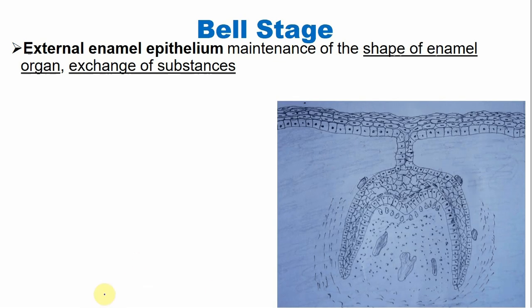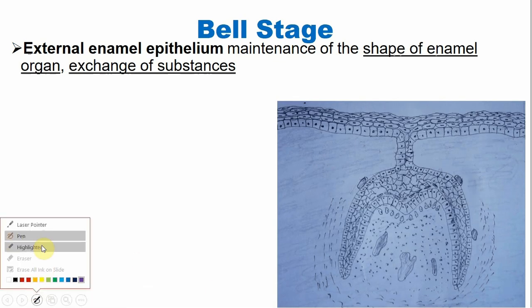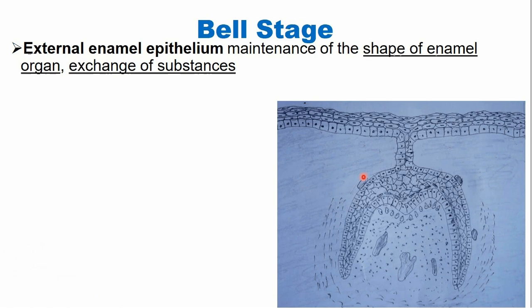Because the blood vessels are present outside the enamel organ, the outer enamel epithelium helps in the exchange of substances from outside to the cells present inside the enamel organ, which need nutrition. So this external enamel epithelium serves as an exchange interface.